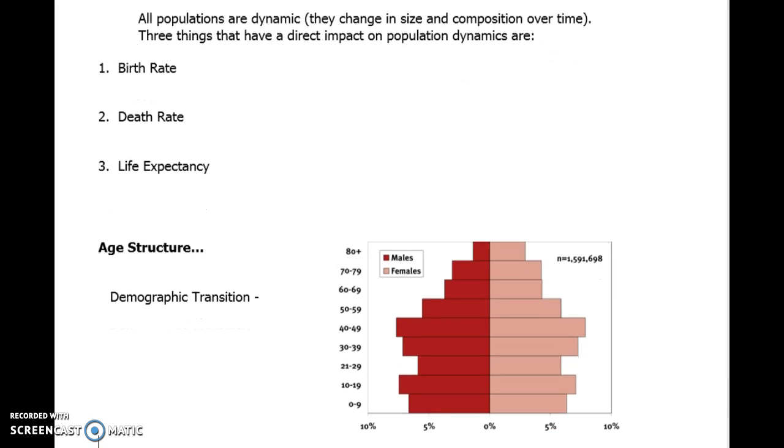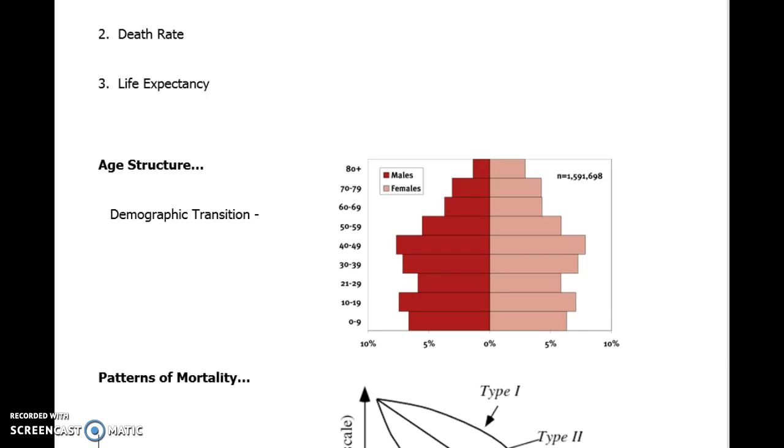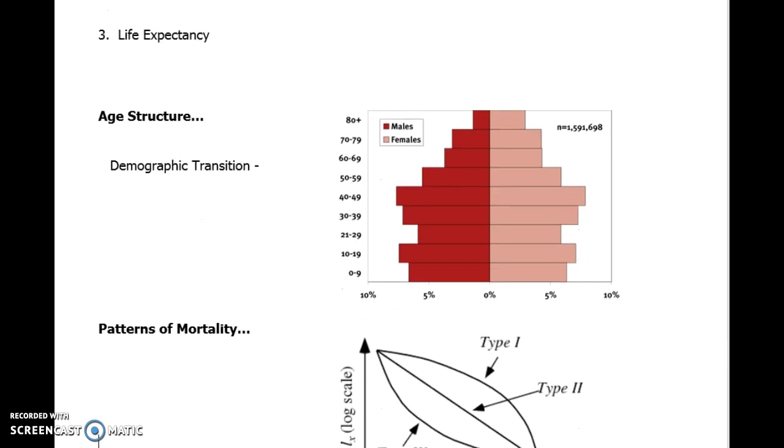In today's lesson, we start with the idea of an age structure diagram. Age structure diagrams are a graphic representation of a population and the range of people's ages. In this graph we have every 10 years. We treat this as a bar graph that's split down the middle, with the left-hand side showing male representation and the right-hand side showing female representation.